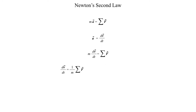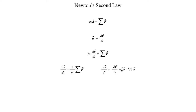We can move the mass over to the right-hand side, giving us dv/dt equals 1 over M times the sum of all the forces. We can also use the fact that the Lagrangian term equals the Eulerian term plus the advection term. So dv/dt equals the partial derivative of the velocity vector with respect to time, plus the advection term acting on the velocity vector.